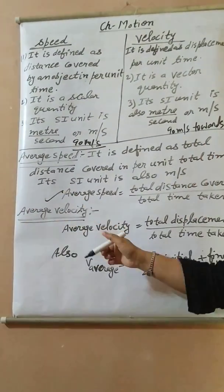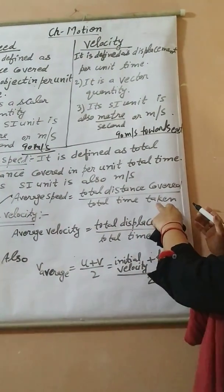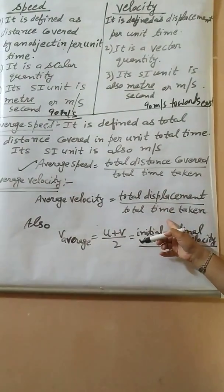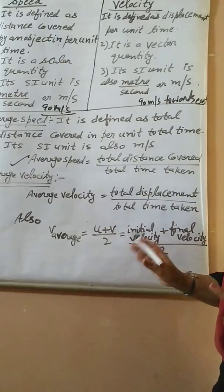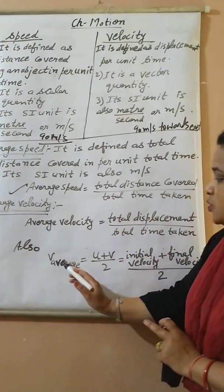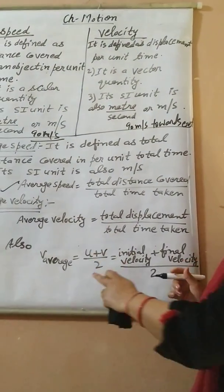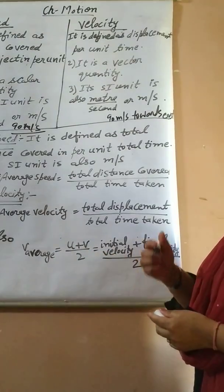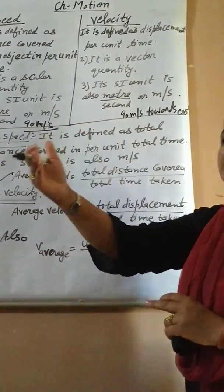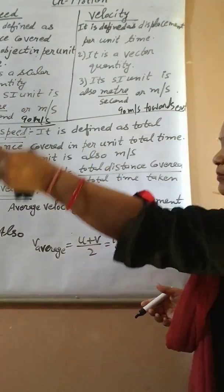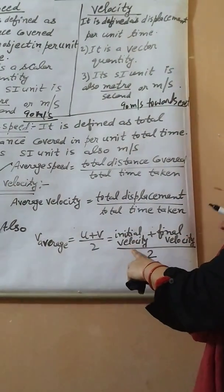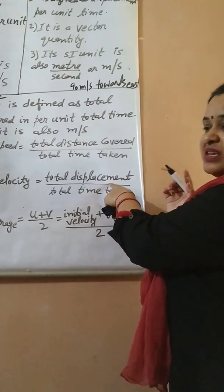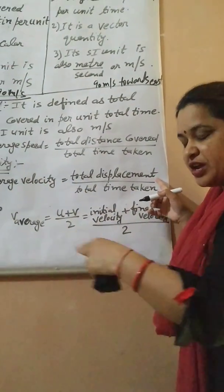Next is average velocity. It is calculated by total displacement upon total time. Distance can never be zero, so average speed can never be zero. But displacement can be zero, so average velocity can be zero. We also calculate average velocity using the formula (V + U) / 2, that is initial velocity plus final velocity divided by 2 — the arithmetic mean of the velocities. This formula is used when velocity values are given and we have to calculate average velocity.